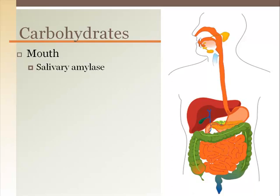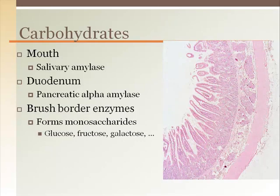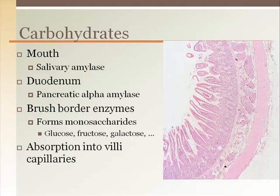The breakdown of carbohydrates begins in the mouth with salivary amylase, then again in the duodenum with pancreatic amylase. These amylase enzymes break the long polysaccharide chains into smaller and smaller segments until a disaccharide is formed. Brush border enzymes then cleave the last bond, forming a monosaccharide that can now cross the simple columnar epithelial tissue and enter the capillaries in the villi.